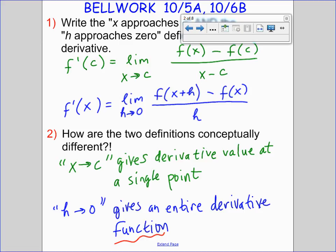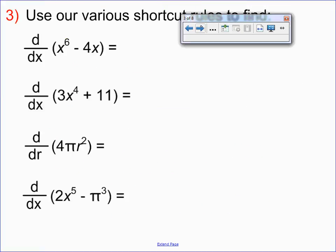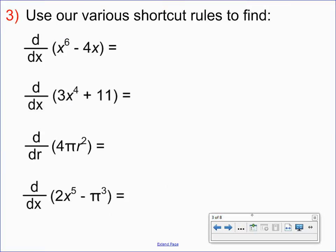They both have their pros and cons. In certain situations the x goes to c definition is more efficient and algebraically often simplifies more easily. If I'm going to be using multiple derivative values, then the h approaches zero would do a better job. These definitions are going to be the subject of our first Moodle discussion forum post this week.